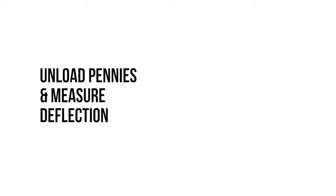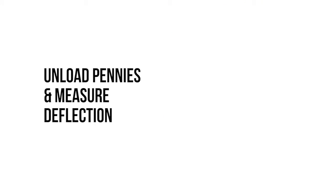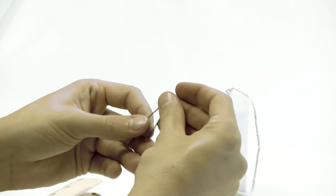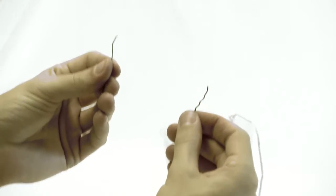Unload the bobby pin. Measure and record any permanent deflection. Bend the annealed bobby pin back to its original position. The annealed bobby pin may break when you try to do this.